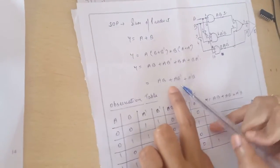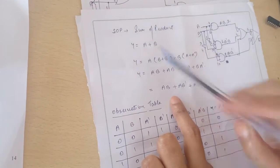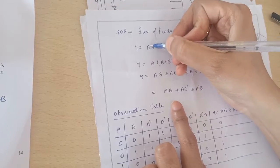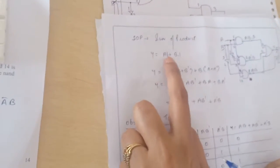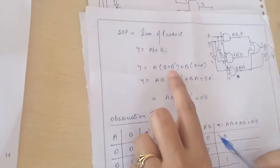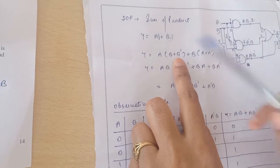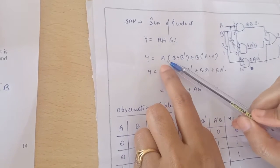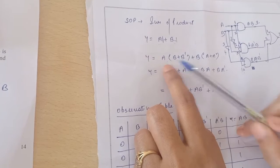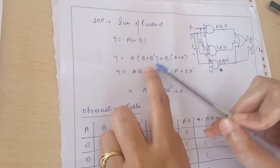Now, what is the method of converting this? Y equals A plus B is given. So we can write A dot 1 or B dot 1. We can multiply it by B plus B-bar, because A doesn't have B and B doesn't have A. So whatever variable is missing, we will multiply by that. Now, B plus B-bar equals 1, so we can multiply it with the help of the identity property.